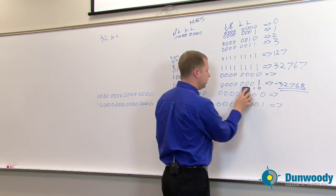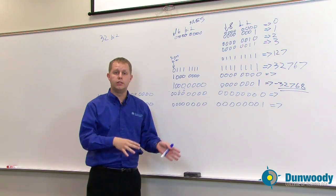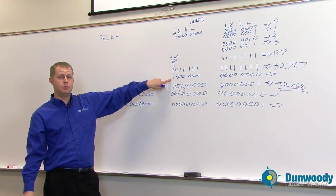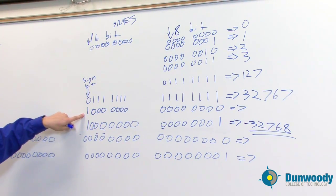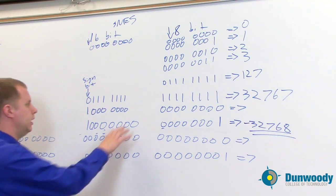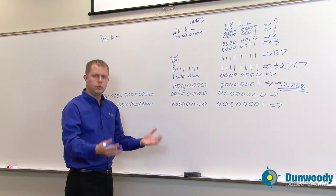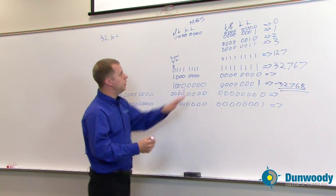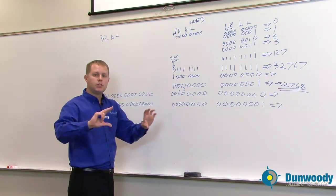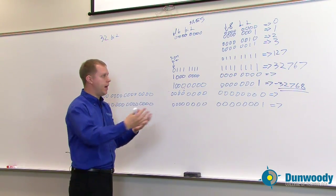Instead, we do what's called 2's complement. There was an original version called 1's complement, which caused a lot of problems — for example, having a negative 0 when there's only one true 0. We can't have 0 and negative 0; that wouldn't make any sense and would confuse a lot of computer programs. So what we do instead is called 2's complement. What you do is, for every number, take the bitwise complement of that number and add 1. And that makes the negative of that number.